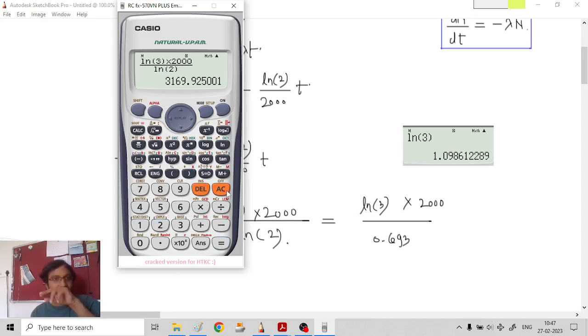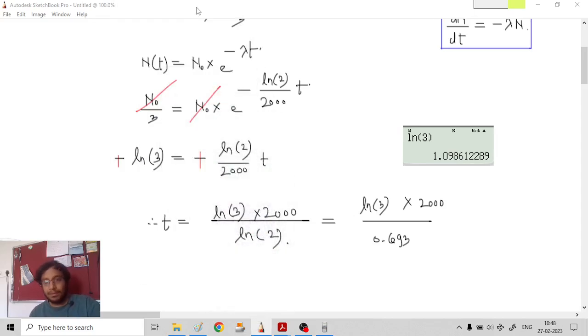ln 3 into 2000 upon ln 2. How much is that? 3169.925. 3169.92 hours.